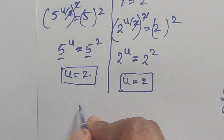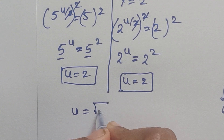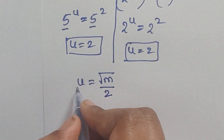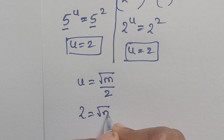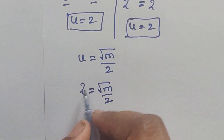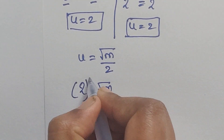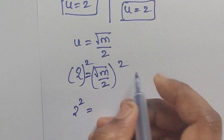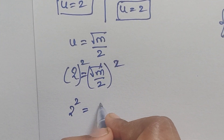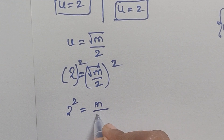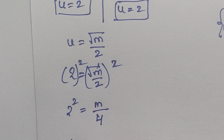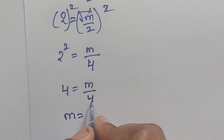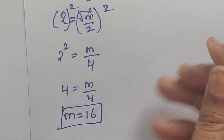We have u equals 2, and we know that u equals square root of m over 2. So 2 equals square root of m over 2. Applying squares on both sides: 4 equals m over 4, therefore m equals 4 times 4, which is 16.